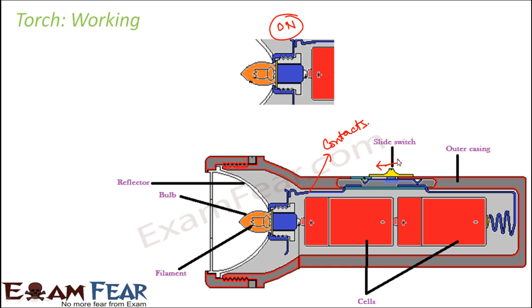Now what happens when we switch it off? When we push it back in the opposite direction or when we slide it backwards, the contact breaks. As you see here, this contact breaks. When the contact breaks, the bulb doesn't glow anymore because the contact is broken. The connection between the bulb and the batteries is broken, so the bulb doesn't glow. This is the situation of off.